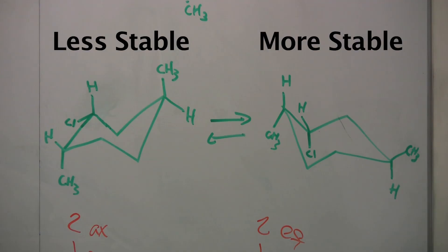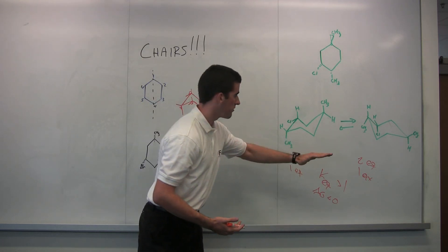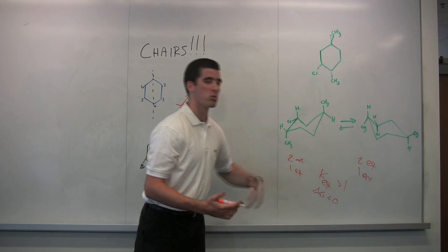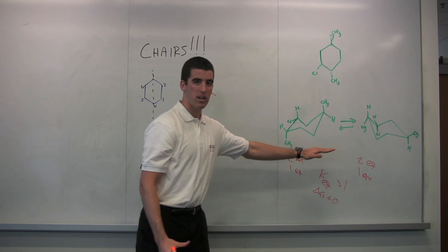So the right side is more stable. That means Keq greater than one, and this reaction is likely to go towards the right. So in equilibrium, you're going to have more of that conformer on the right. And that's just based on the stability of the atom positions. You have no longer two axials, you have two equatorials. So the side that has more axials is less stable than the side that has more equatorials.